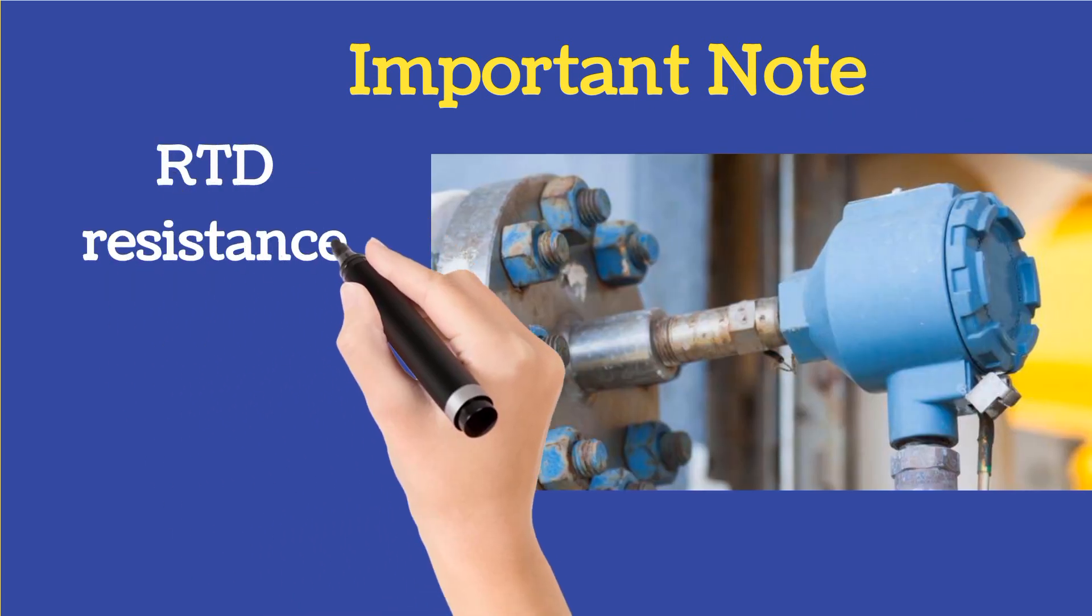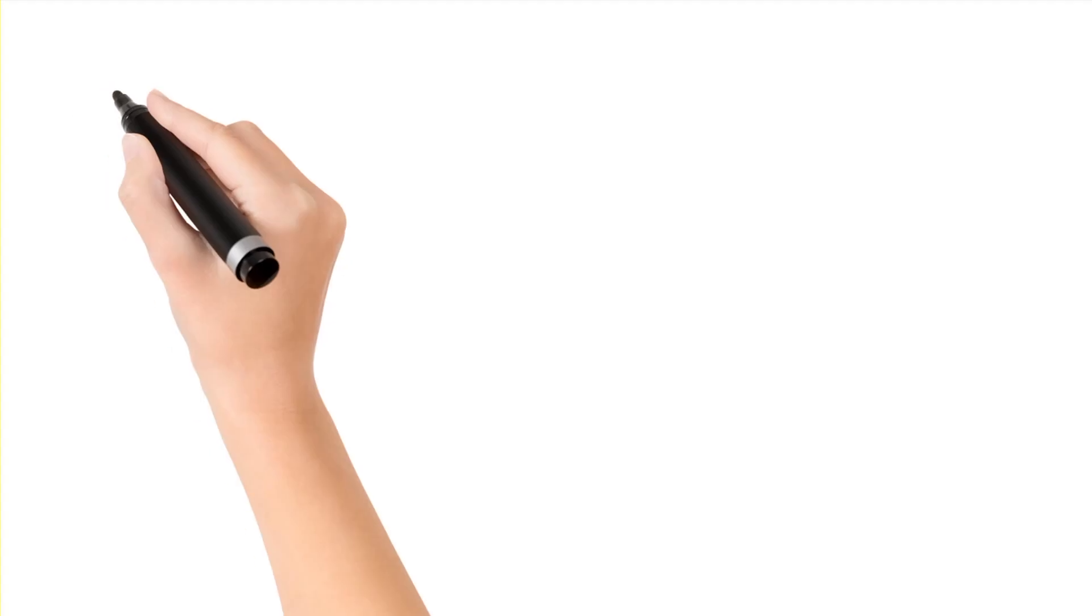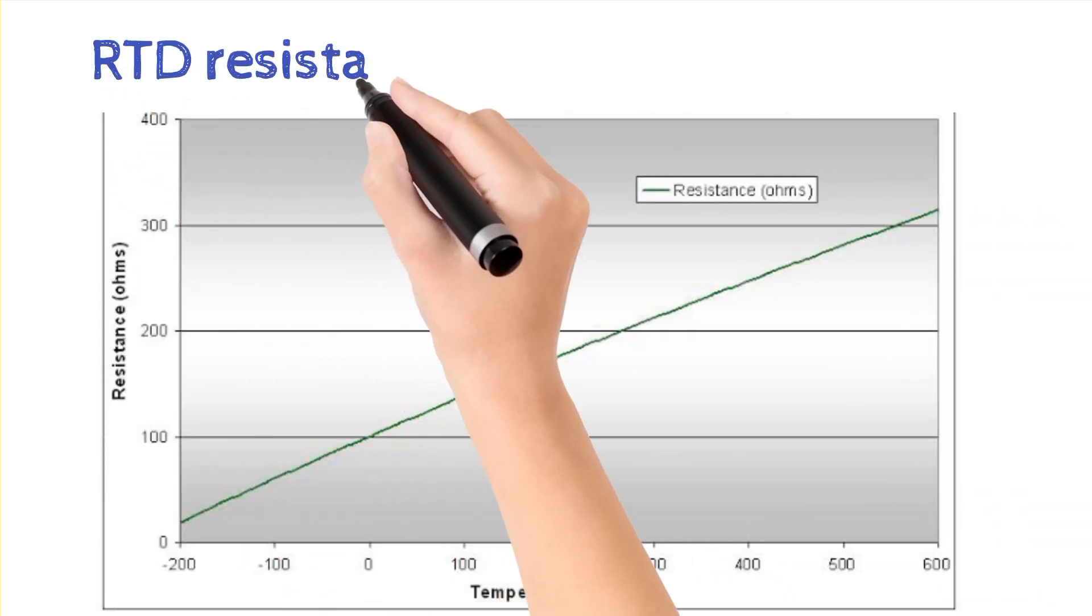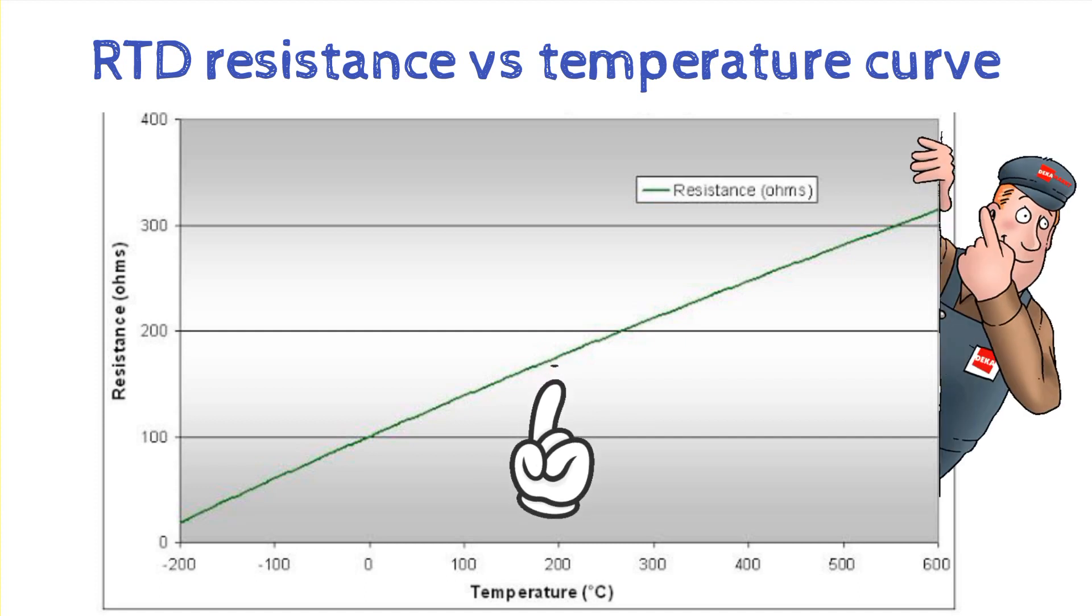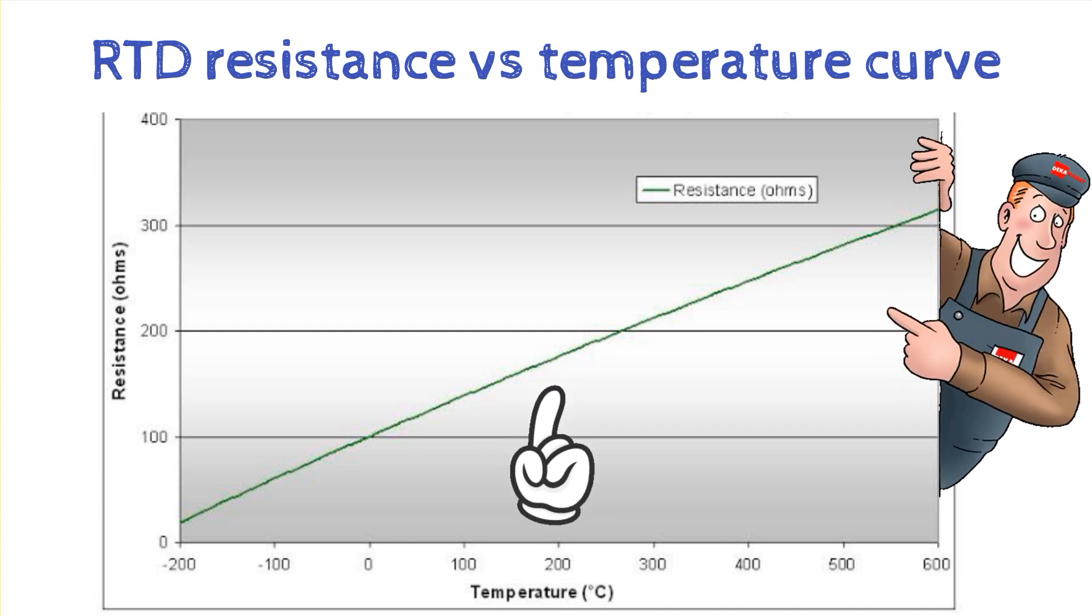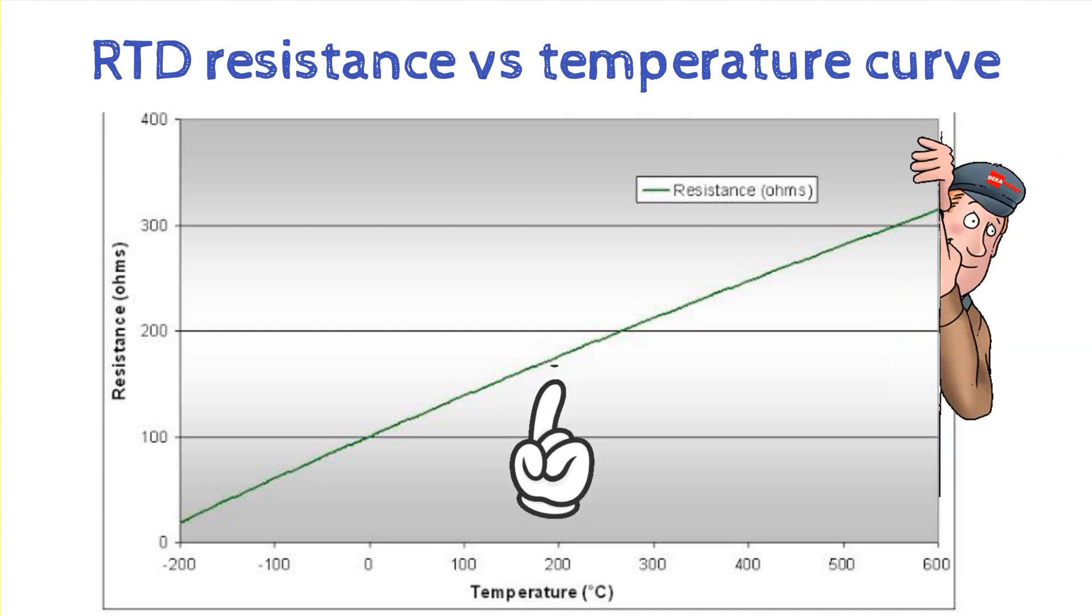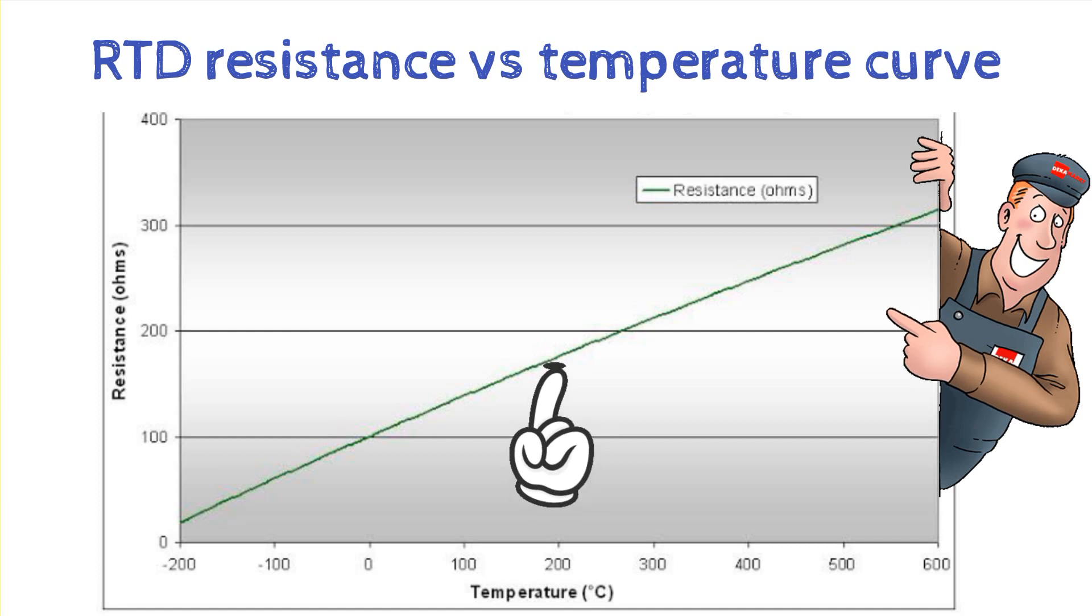Now this is the important point. RTD resistance varies with temperature linearly. Now let's discuss what does it mean. Here RTD resistance and temperature curve is shown in this image. If two quantities have the linear relationship then there will be a straight line between them as shown by the hand arrow. Suppose if temperature increases from 100 degree Celsius to 200 degrees and suppose resistance increases 40 ohms, then from 200 degree Celsius to 300 degree Celsius the resistance will increase by the same amount that means 40 ohms.